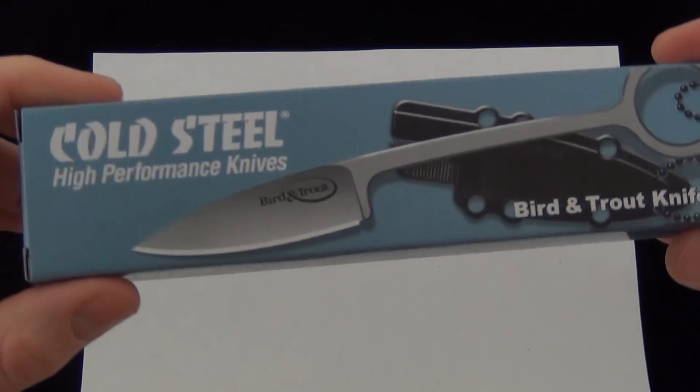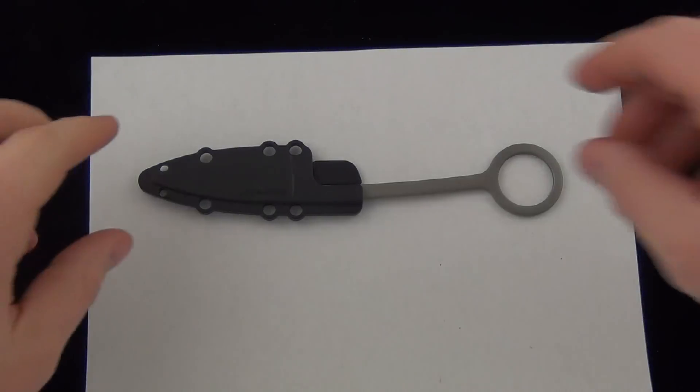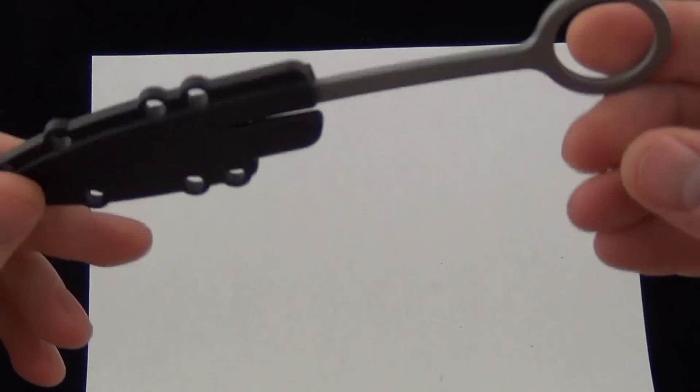Here is the Cold Steel box. So this isn't a new design by Cold Steel or anything. The Bird and Trout Knife has been around for quite a while.